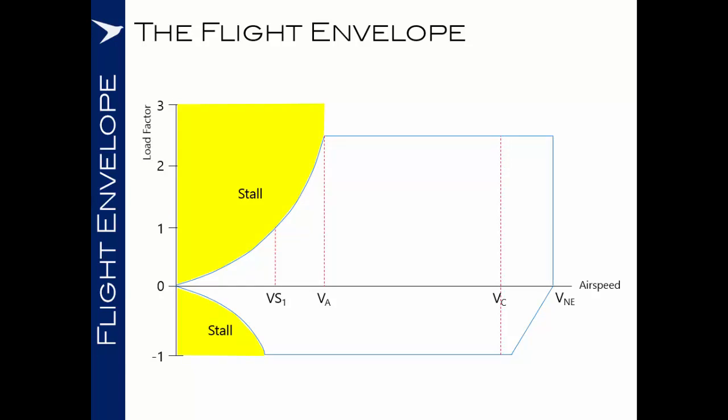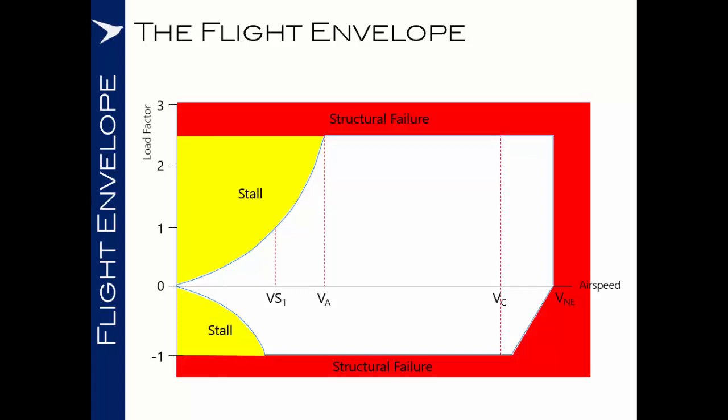Once we are beyond VA, if we exceed the certificated maximum load factor of the aircraft or if we exceed the maximum certificated speed for the airframe, then we will risk structural failure. Therefore, you can see the importance that during upset recovery, we work to keep the aircraft within this flight envelope.